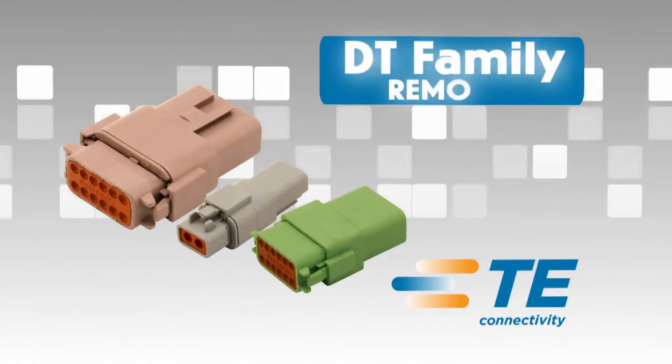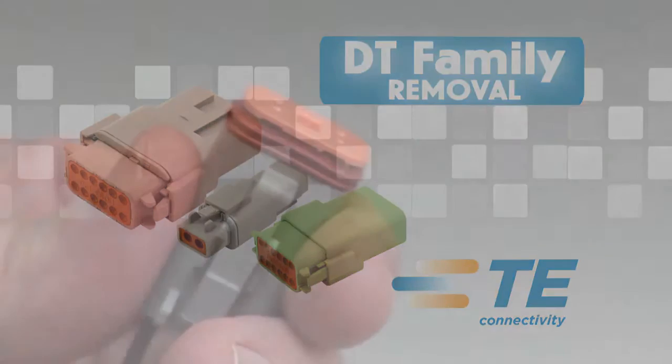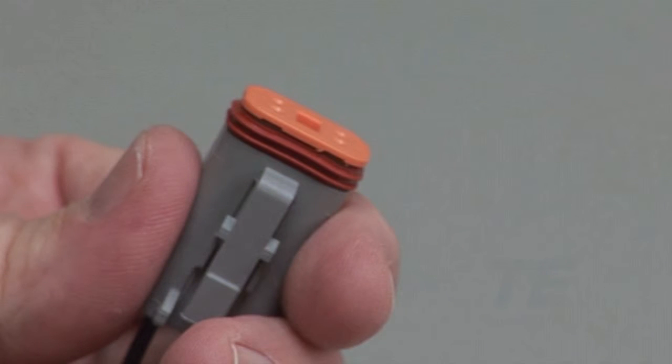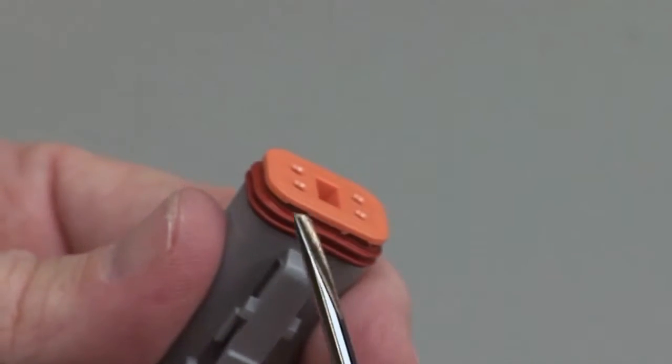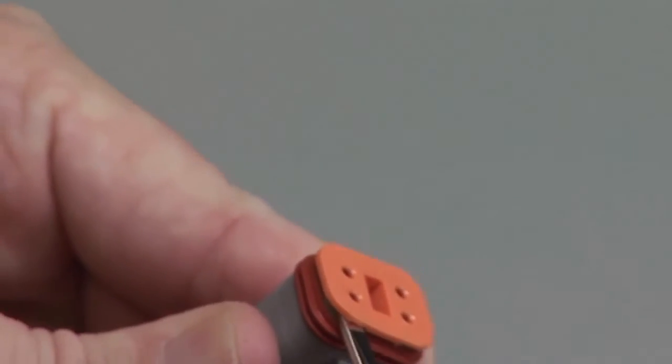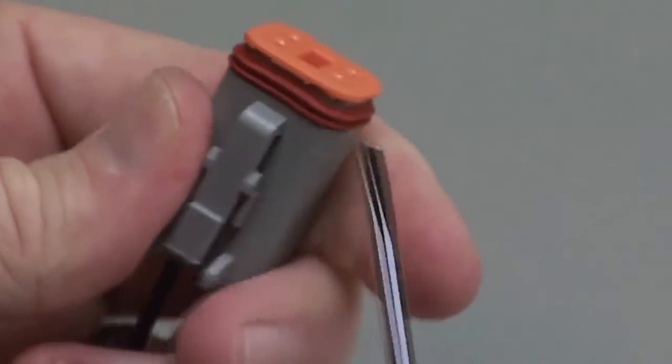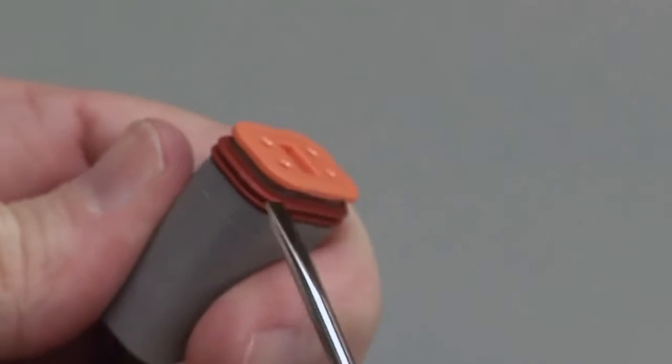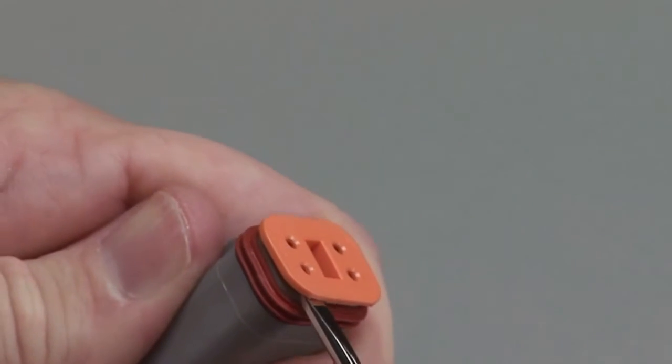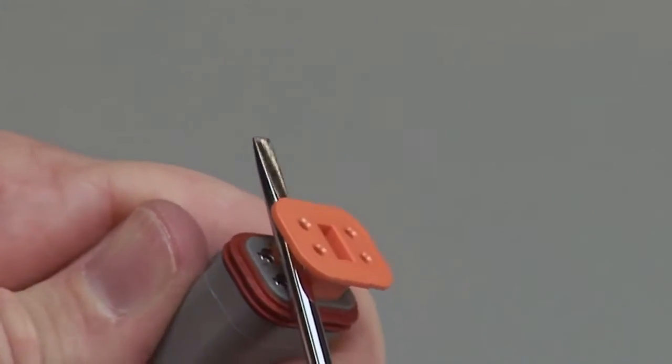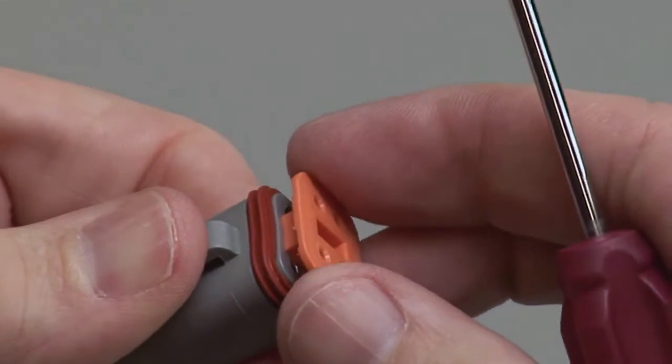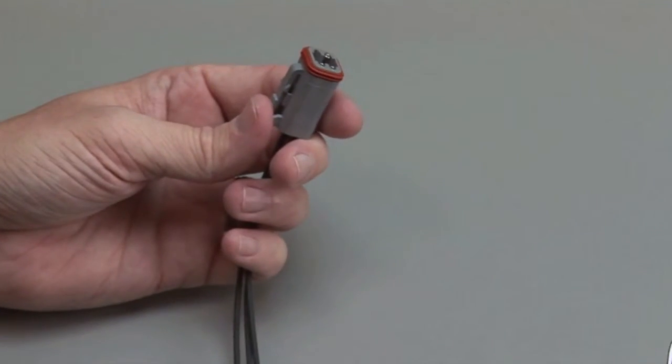DT contact removal. Connectors must be unmated to remove the contacts. Begin by removing the wedge lock with a DT-RT1 removal tool, a screwdriver, a hooked tool, or a pair of needle nose pliers, being careful not to damage the interfacial seal. Pull the wedge lock straight out.